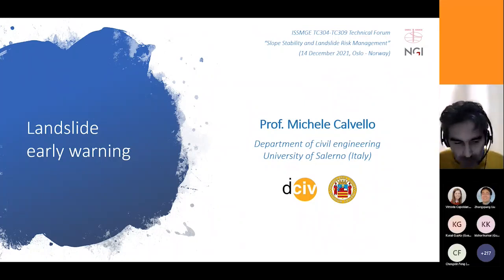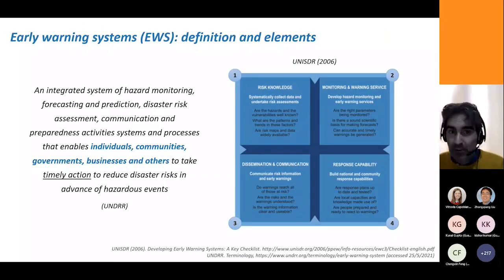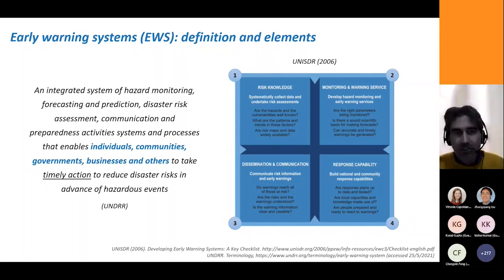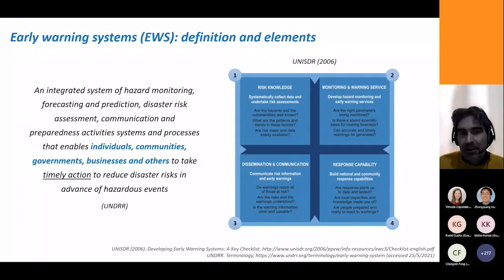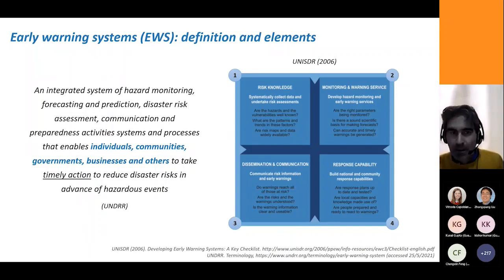I move quickly to my presentation. I will deal with landslide early warning. I would like to start with a definition and a framework for early warning systems proposed already 15 years ago by the then United Nations International Strategy for Disaster Reduction, now UNDRR. In both the definition and the schematic, the role of dissemination, communication, and response capability is highlighted alongside risk knowledge, monitoring, and warning.